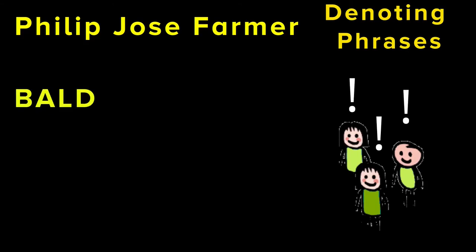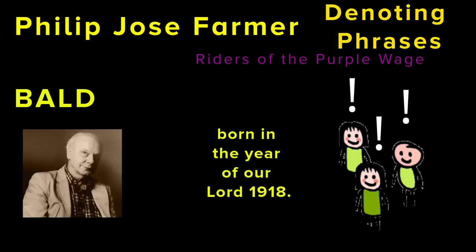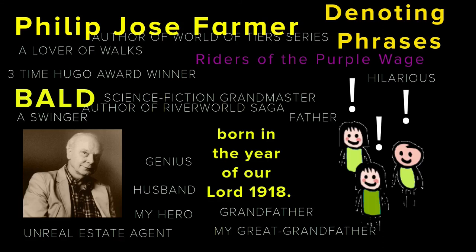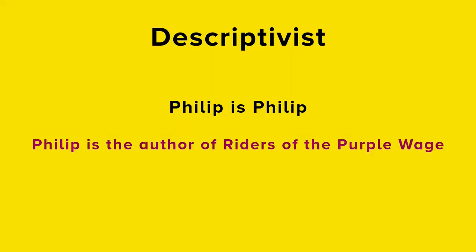Philip Jose Farmer was bald, the author of 'Writers of the Purple Wave,' this man in this picture, born in the year of our Lord 1918, and so on and so forth. We can only get a grasp on an object with a proper name by continually predicating true statements about it, or by continually denoting it to other objects. This is a descriptivist interpretation of language — we understand names by describing what they are. 'Philip is Philip' is trivial. 'Philip Jose Farmer is the author of Writers of the Purple Wage' is informative.